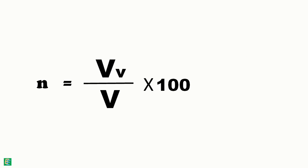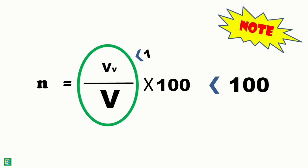Hence, in the equation, numerator will always be less than the denominator. The value of this ratio will always be less than 1. We can note here that the value of porosity can never be greater than or equal to 100%.